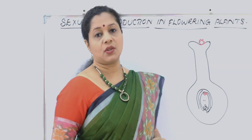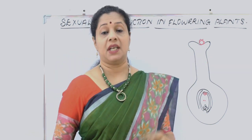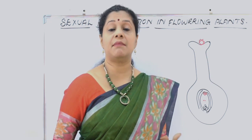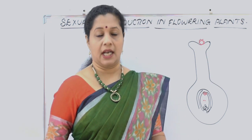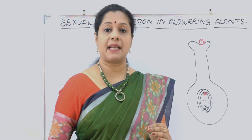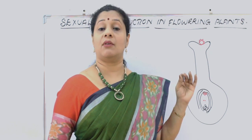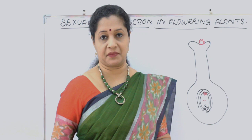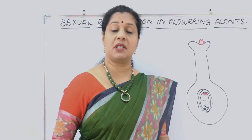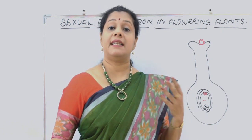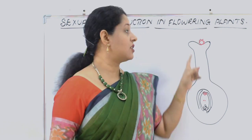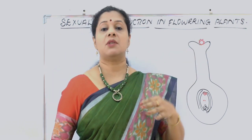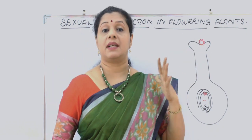Once a pollen lands on the stigma, the pistil has to decide whether it is compatible or incompatible. If it is compatible, the pollen will be accepted by the pistil. This is determined through certain chemical components of the pollens landing on the stigma, which determine whether it is competent.